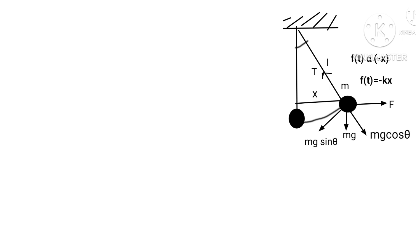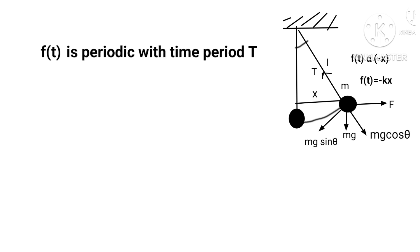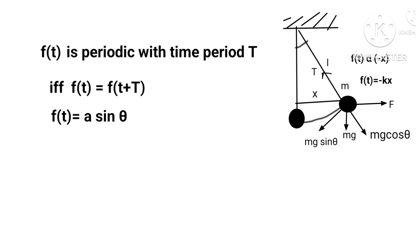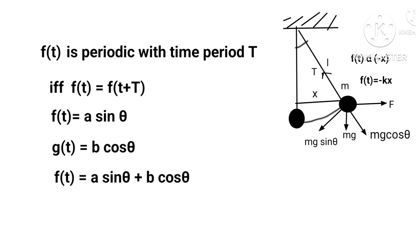The displacement can be represented by a mathematical function of time, f(t). Thus the function f(t) is periodic with period T if f(t) equals f(t + T). Let a periodic function be represented by f(t) equals A sinθ and g(t) equals B cosθ. A linear combination of these sine and cosine functions is also given by f(t) equals A sinθ plus B cosθ.